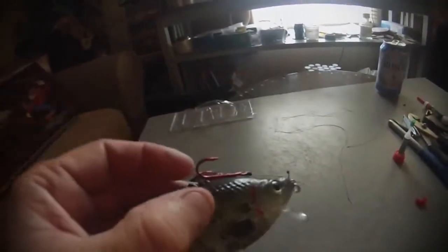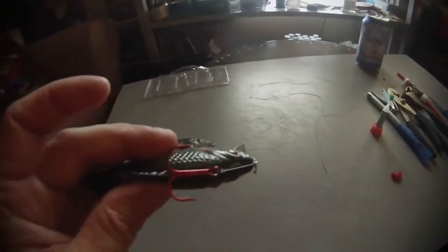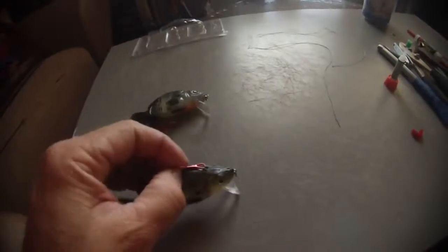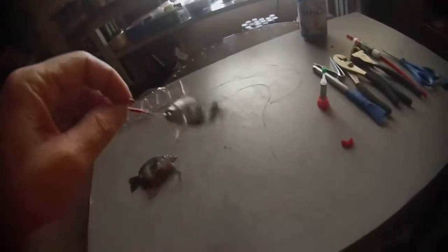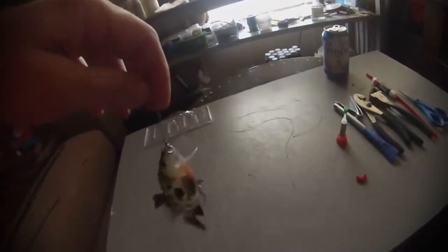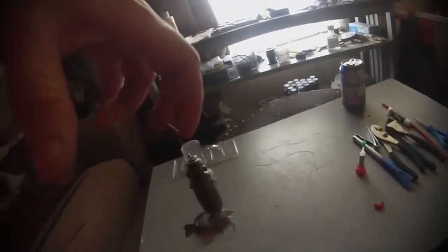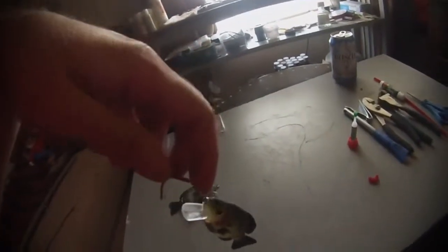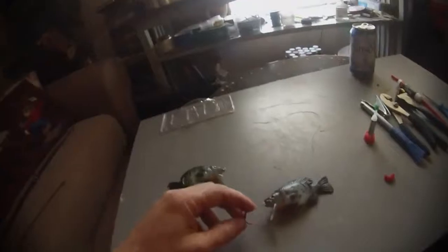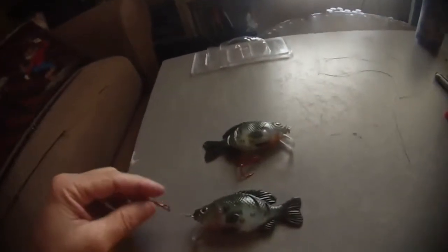It's the finished product. When a fish bites that thing and gets that hook in his mouth, it pops out, and they don't have the weight of the swim bait. Most likely that swim bait will be outside the fish's mouth.